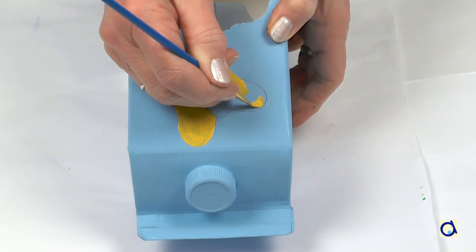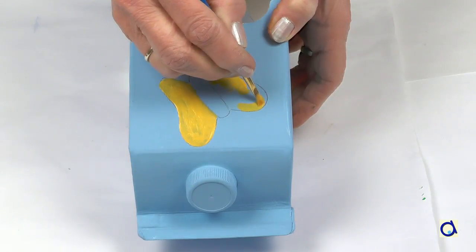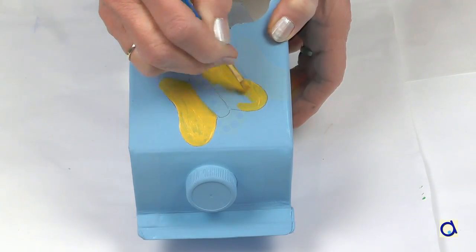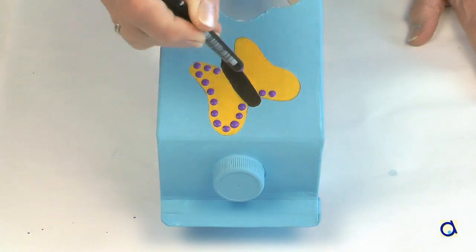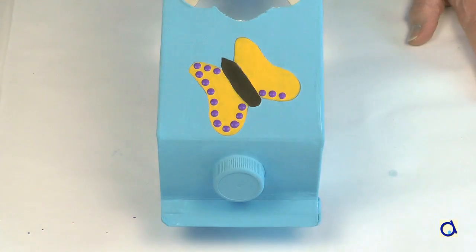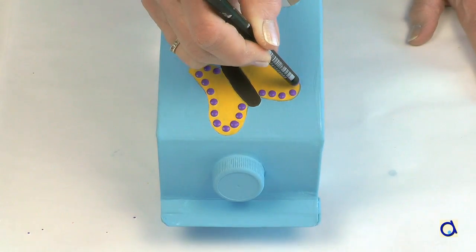On the third side, I drew a butterfly. I painted the wings yellow and the body in a dark brown. I put several coats of yellow to hide the blue background. Then I put purple and pink dots on the wings and yellow dots on the body.